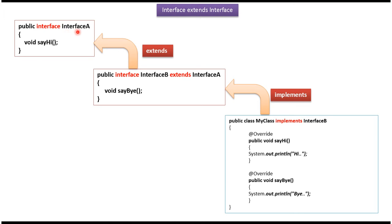Here you can see interface A — it has abstract method sayHi. Here you can see interface B, which extends interface A, and it has one abstract method sayBye. Here you can see MyClass, which implements interface B. So it has to provide implementation of the sayBye method, and also the sayHi method, because interface B extends interface A.